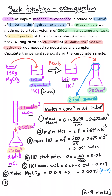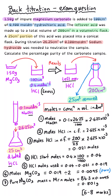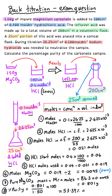We were given a mass of magnesium carbonate, so we convert moles to mass: Mr of MgCO₃ = 84.3, so mass = 84.3 × 0.0095 = 0.801 g. Finally, percentage purity = (pure mass / impure mass) × 100 = (0.801 / 1.50) × 100 = 53.4% (to three significant figures).